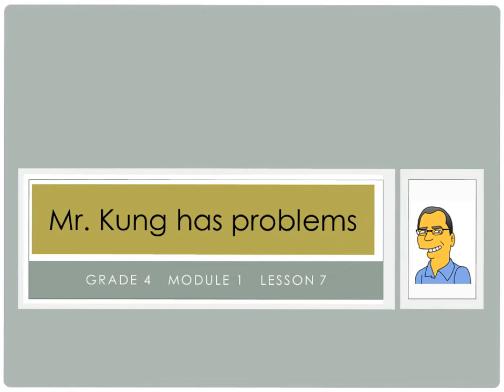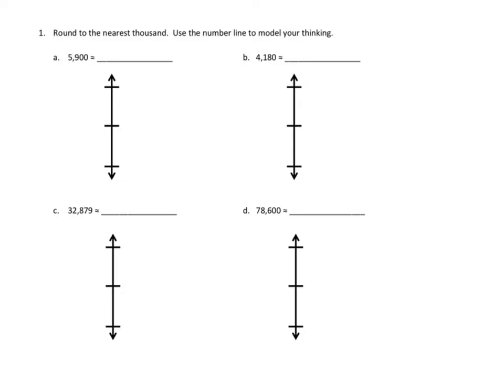Let's take a look at maybe three problems from tonight's homework, and hopefully that'll get you started and you'll be able to get going on your own homework for this evening. Let's take a look at a couple problems from Number 1. Number 1 asks us to round to the nearest thousand, use the number line to model your thinking. Let's take a look at Problems B and D.